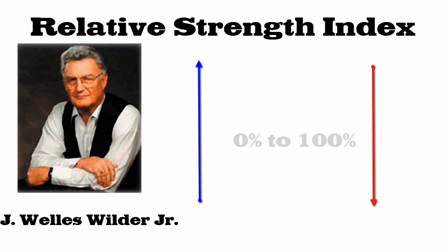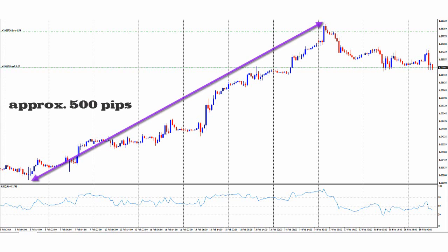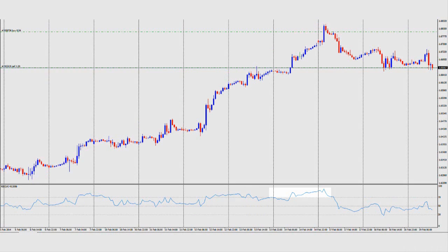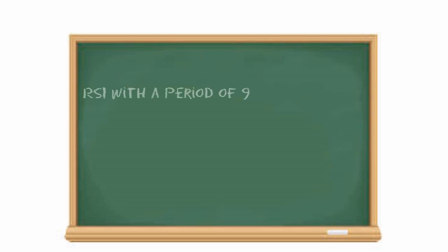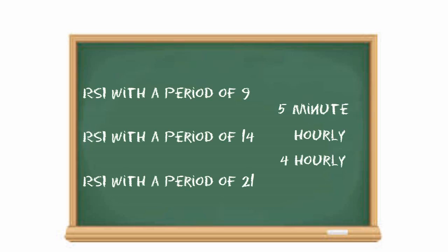The RSI can be used just like the stochastic — we can use it to pick potential tops and bottoms depending on whether the market is overbought or oversold. Here's an hourly chart of the pound against the dollar: the pound has been climbing and moved about 500 pips over two weeks, however the RSI rose above 70, signaling that there might be no more buyers left in the market and that the move could be over — prices then reversed and headed back down. The three most popular period options are RSI 9, RSI 14, and RSI 21, applicable on all chart frames. The most popular setting is 14, which we use primarily throughout the webinar series.